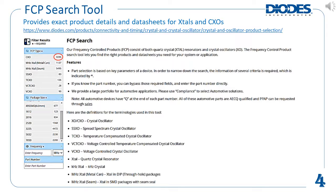All of Diodes' FCP devices can be searched for parametrically using the FCP search tool shown on this page. The FCP type field lists many family options. Major families include CXOs, also called XOs, which are crystal oscillators; megahertz crystals in seam-sealed surface-mount ceramic packages; SSXOs, which are spread-spectrum crystal oscillators; TCXOs, which are temperature-compensated crystal oscillators; and VCXOs, which are voltage-controlled crystal oscillators.